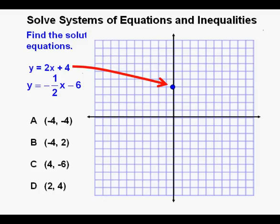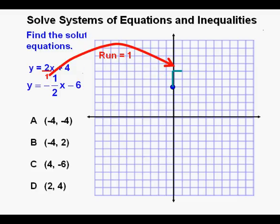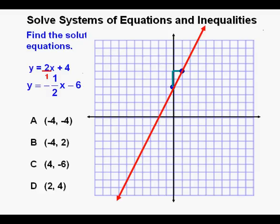We start at 4 on the y-axis since it is the y-intercept of the first equation. Next, with a slope of 2 we change it to the fraction 2 over 1 — we draw a division bar under the 2 and place a 1 in the denominator. Since the numerator of the slope is 2 we have a rise of 2, and since the denominator is 1 we go to the right 1 for a run of 1. We mark a point at the end of the rise and run, then draw our line through the two points.